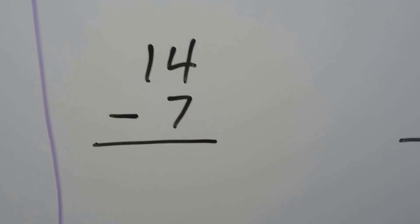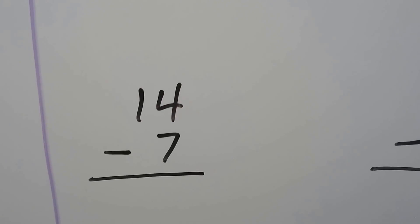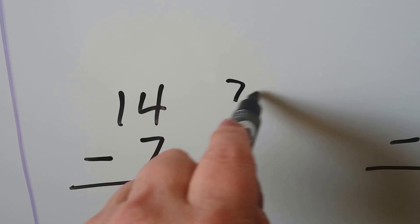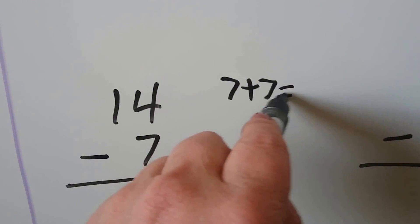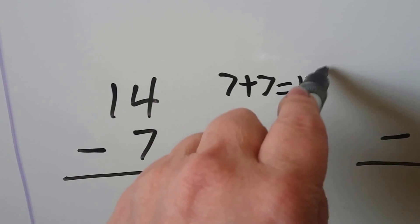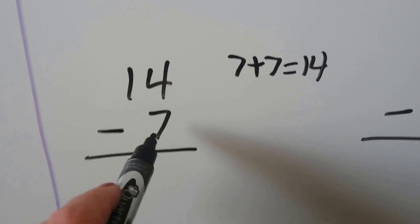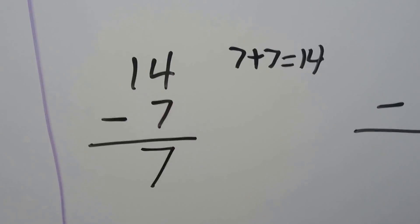14 minus 7. We can think doubles. If we know 7 plus 7 is equal to 14, then we know 14 minus 7 is equal to 7.